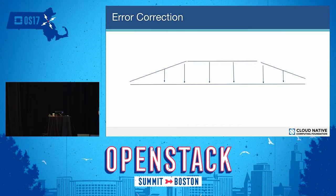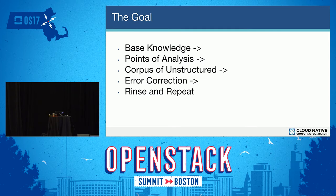When we talk about machine learning, it's very important to note what we're trying to accomplish. With machine learning, it's very important to get the most accurate results possible. If we have a traditional bell curve, that's garbage — we don't want anything like that. So we're going to continually train our system to eke out the best possible accuracy we can. The goal: we start with some base knowledge, points of analysis, a corpus of unstructured data. We feed that into our system, notice the errors, correct, rinse and repeat. It's a cycle.